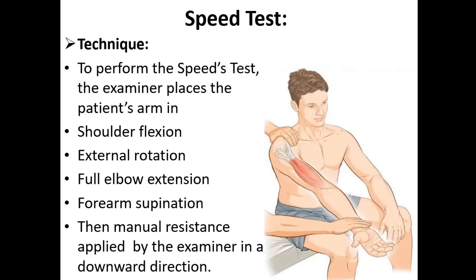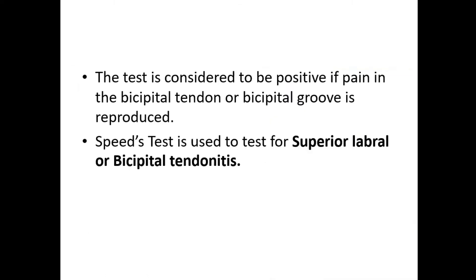Now, Speed test. To perform the Speed test, the examiner places the patient's arm in shoulder flexion, external rotation, full elbow extension, and forearm supination. Then, manual resistance is applied by the examiner in a downward direction. The test is considered positive if pain in the bicipital tendon or bicipital groove is reproduced.